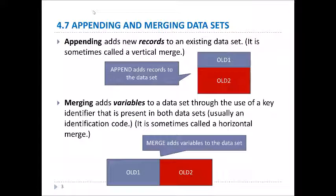In the example to the right, you'll see the original dataset called old1, and then you add new records to it from the old2 dataset. Merging means that you add variables to a dataset through the use of some key identifier that's present in both datasets, usually some ID code. This is sometimes called a horizontal merge, and you can see in the graphic below: old1 is the original dataset, and then you add new variables to it from the dataset old2.